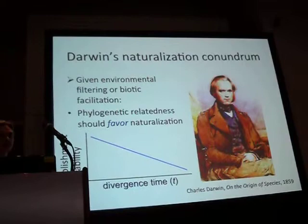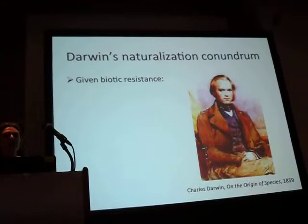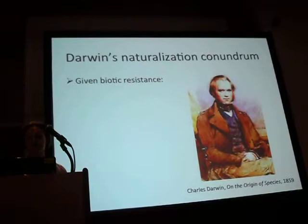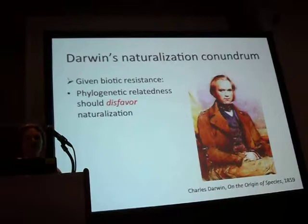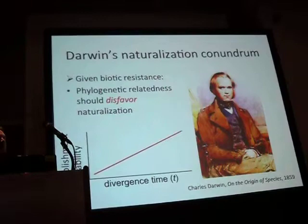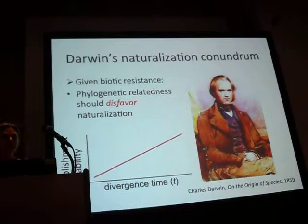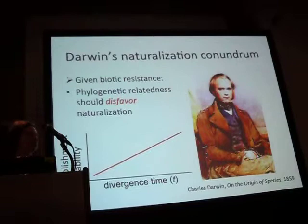But when you start thinking about other kinds of interactions — biotic resistance, or competition, or interactions with natural enemies — then you should expect the opposite relationship, where phylogenetic relatedness should be a disadvantage to naturalization. Closely related species are going to face a lot of competition, especially with close relatives already in the environment, and they may be attacked a lot by the natural enemies of their closely related species, whereas if they diverge more, they'll escape those negative interactions.